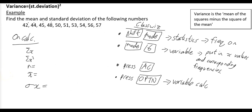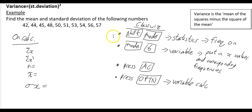Using the calculator method: the first thing I'd advise is to change your calculator so that frequencies are switched on. Press Shift and Mode, go to Statistics, then Frequency On — it's the only option. This is perfect for this example anyway, but it's just as easy to have frequencies on. You'll see why in later examples.